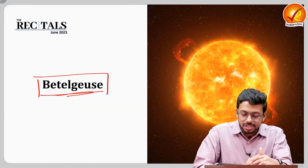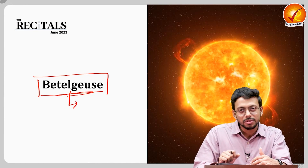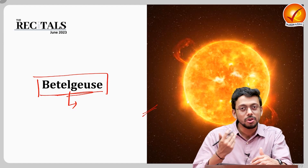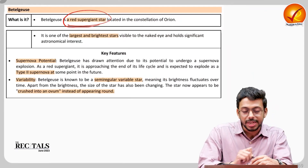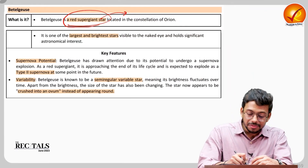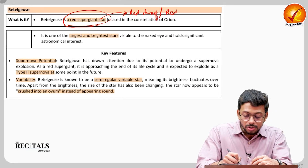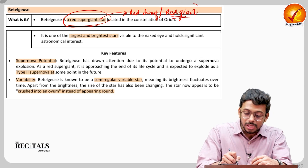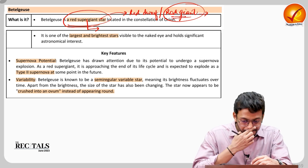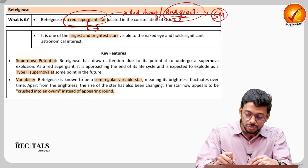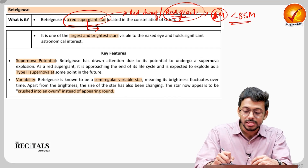Betelgeuse — from the name it's difficult to find out what we're talking about, but from the figure we can see some kind of star. Betelgeuse is a red supergiant star. In previous topics we read about red dwarf and red giant — the phase our own sun will convert into. Red giant applies when a star's mass is less than 8 solar masses.